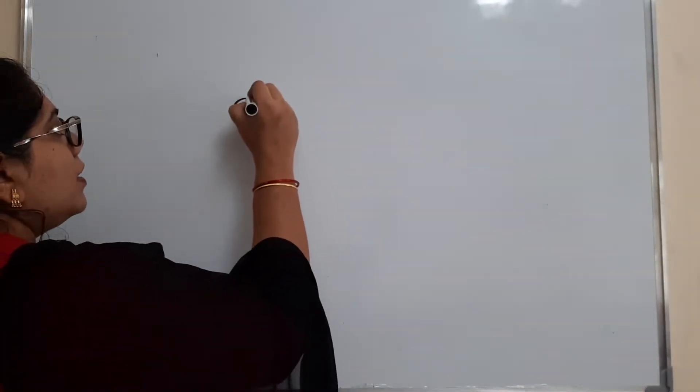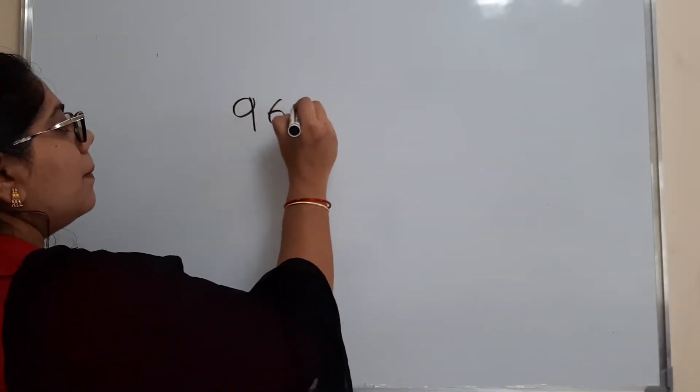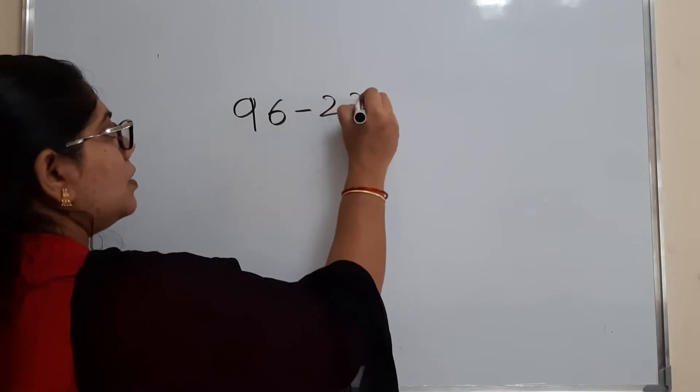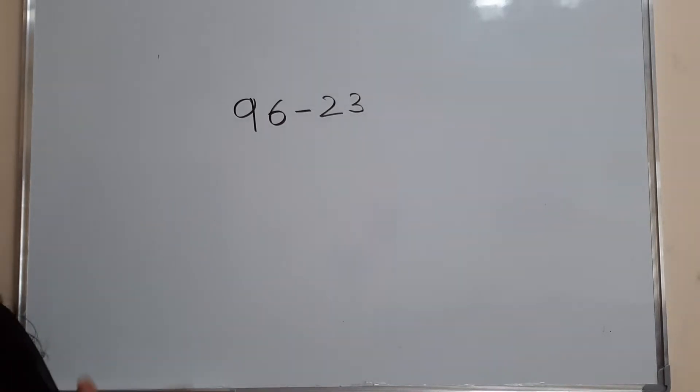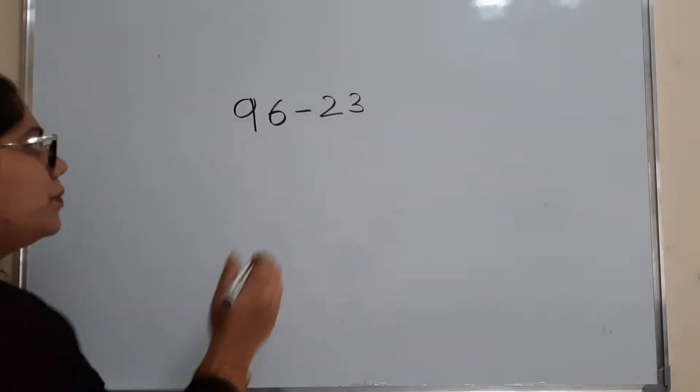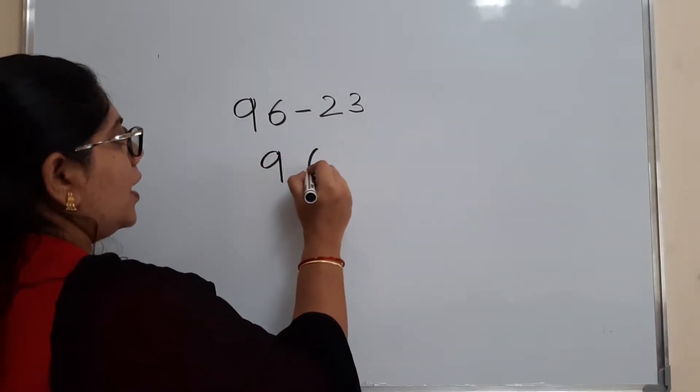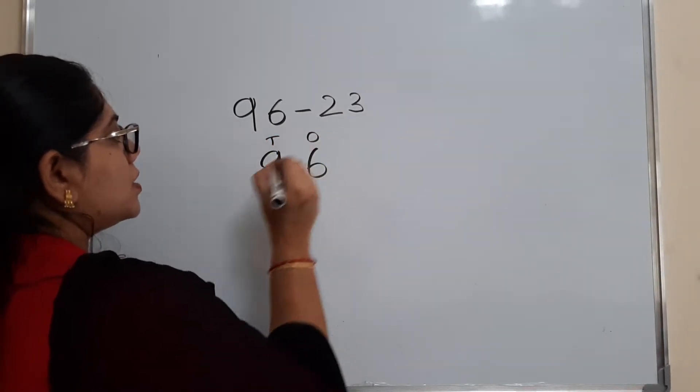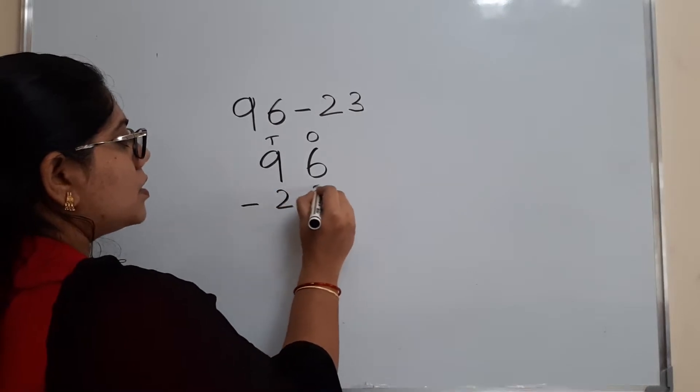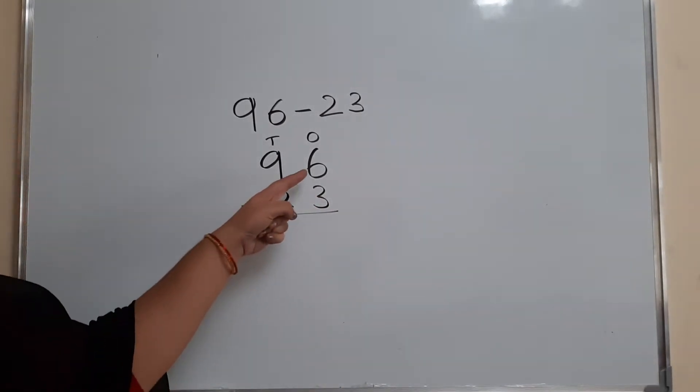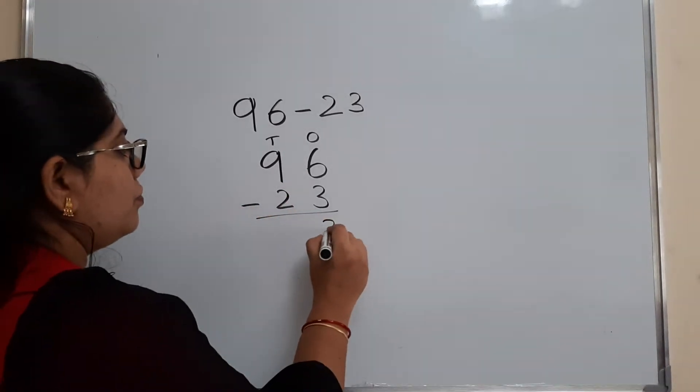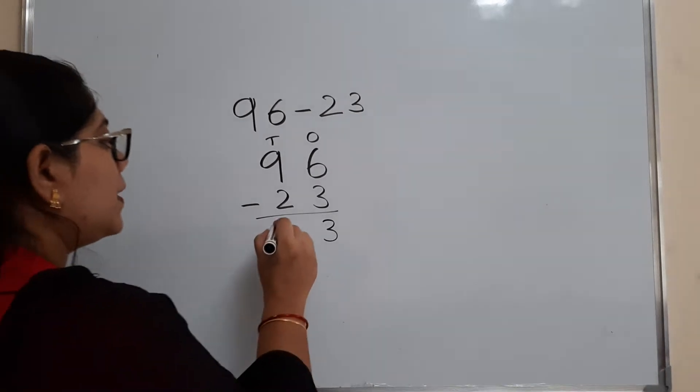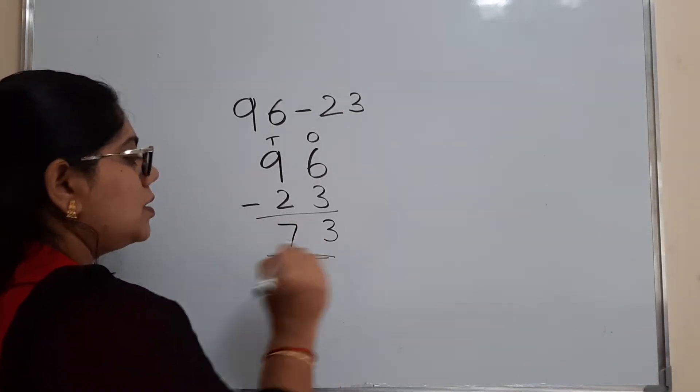Question is 96 minus 23. When you do normal subtraction, we will write 10s once, then 96 minus 23. Then you will do once minus once. That is 6 minus 3 equals 3, 9 minus 2 equals 7, so 73.